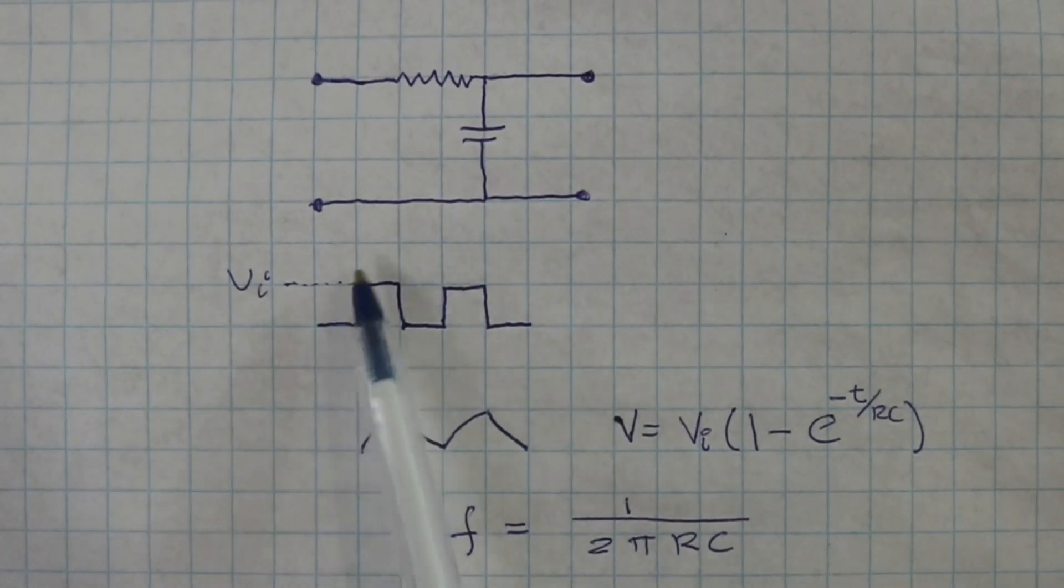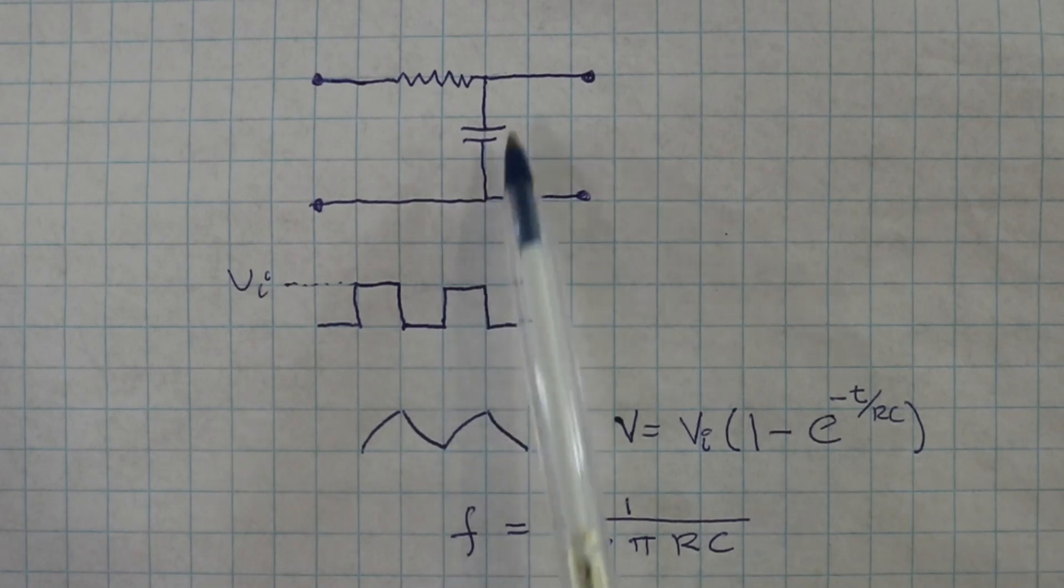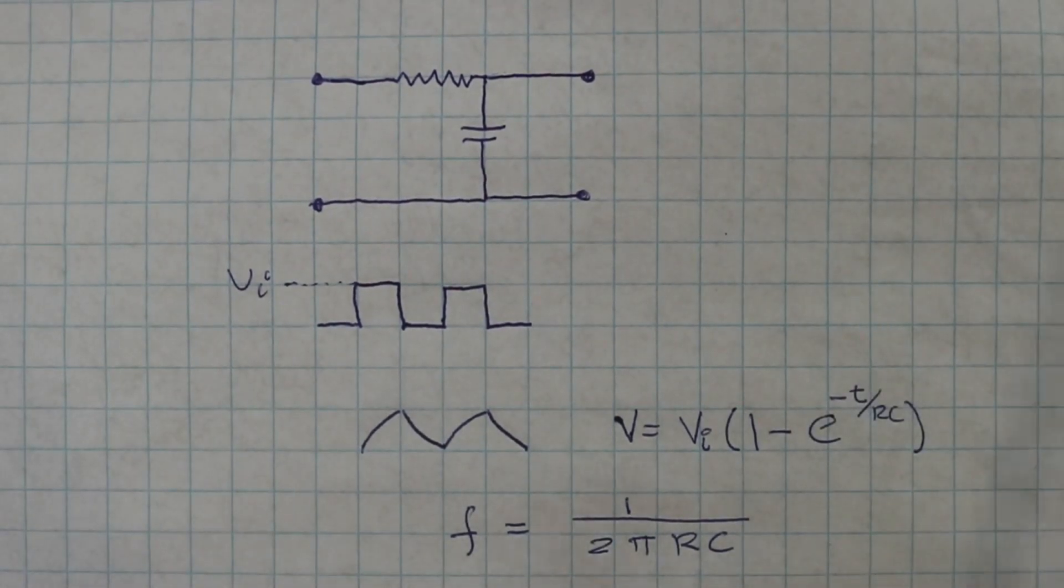So we apply the square wave signal at the input and the voltage at the capacitor will depend on how fast it charges.